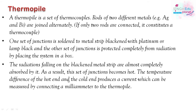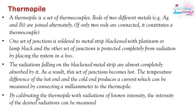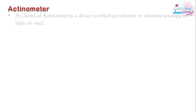When radiation is absorbed, the junctions become hot. The temperature difference between the hot and cold junctions produces a current, which is measured using a milliammeter. When the thermopile is calibrated with radiation of known intensity, the intensity of the desired radiation can be measured.